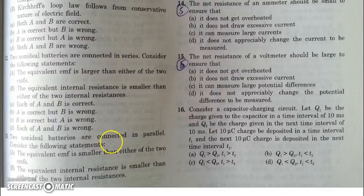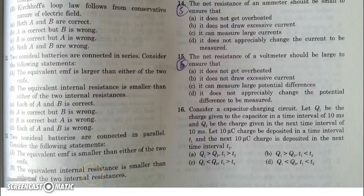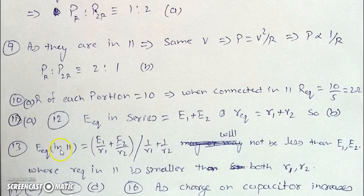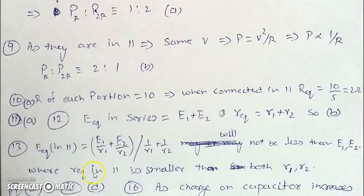In the next question, two non-ideal batteries are connected in parallel. We need to verify: whether the equivalent EMF is smaller than either of the two EMFs, and whether the equivalent internal resistance is smaller than both internal resistances. The equivalent EMF formula — (E1/R1 + E2/R2)/(1/R1 + 1/R2) — gives a value between E1 and E2, so it will not be less than both. However, in parallel the equivalent resistance is indeed smaller than both R1 and R2.